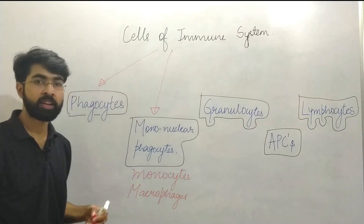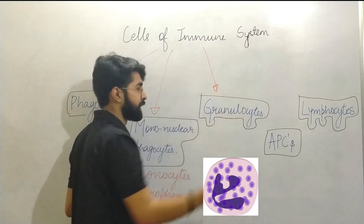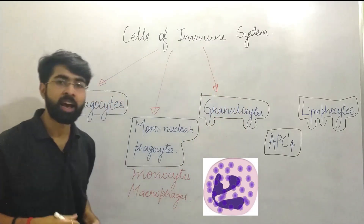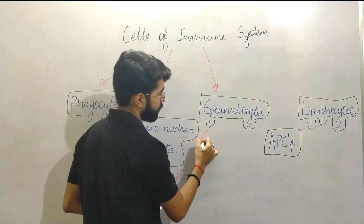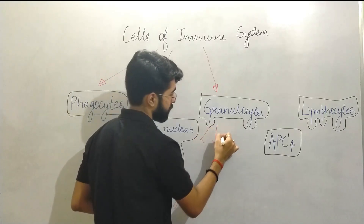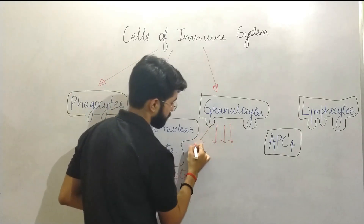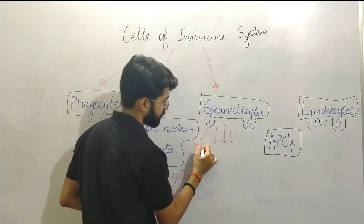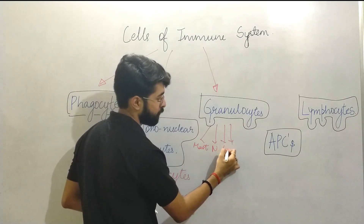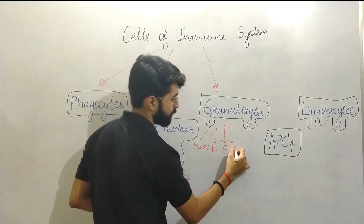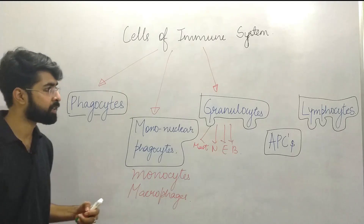Next are granulocytes. These cells have granules in them and are categorized into four types: mast cells, neutrophils, eosinophils, and basophils. We'll also discuss these cells in detail later.